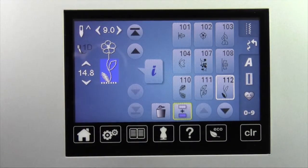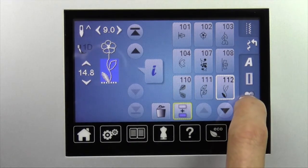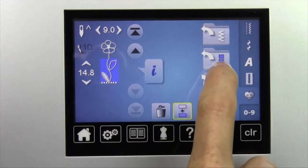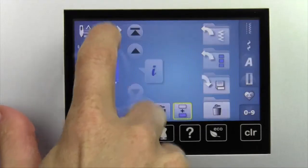Or I could set it to just sew that combination one time. Maybe I'd love it and I want to save it into memory. I can touch the personal program, the heart with a smiley face, and save it into that area and touch the yellow box to save that.